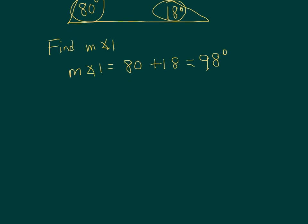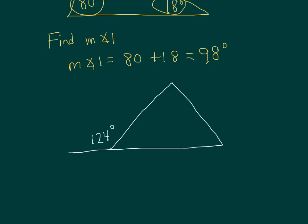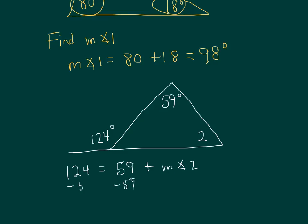Now let's apply it a little differently with another triangle. The measure of an exterior angle is 124 degrees, and one of the interior angles is 59 degrees. We want to find the measure of angle 2. Using the same theorem: 124 equals 59 plus the measure of angle 2. Subtracting 59 from both sides, the measure of angle 2 is 65 degrees.